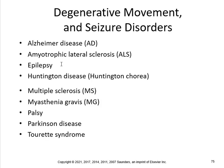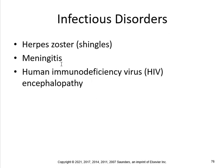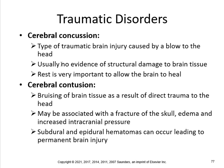Other conditions include Alzheimer's disease (AD), amyotrophic lateral sclerosis (ALS, Lou Gehrig's disease), epilepsy, Huntington disease, multiple sclerosis (MS), myasthenia gravis, palsy, Parkinson's, and Tourette's syndrome. Infectious disorders include herpes/shingles, meningitis, HIV, and encephalopathy. Cerebral concussion is a type of TBI — traumatic brain injury caused by a blow to the head. Usually there's no evidence of structural damage to brain tissue, but rest is very important to allow the brain to heal.